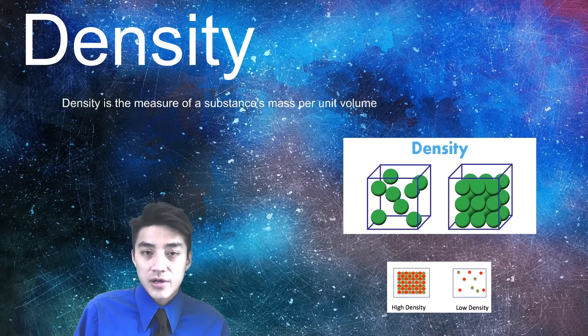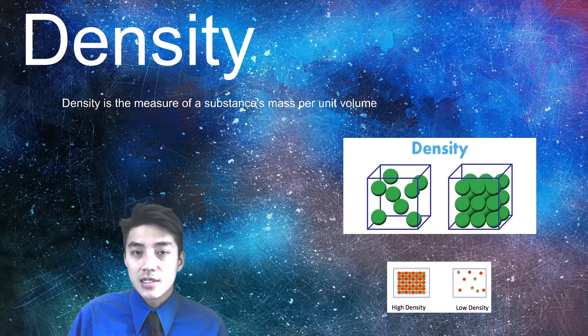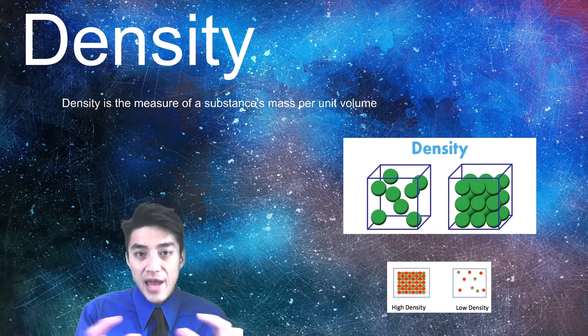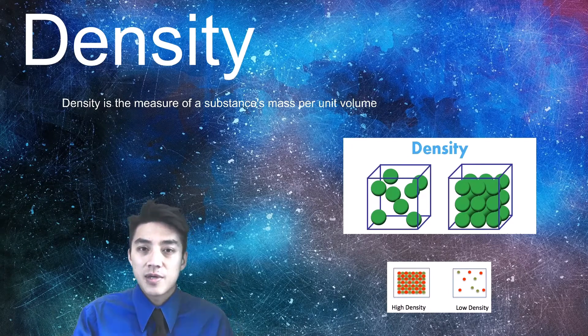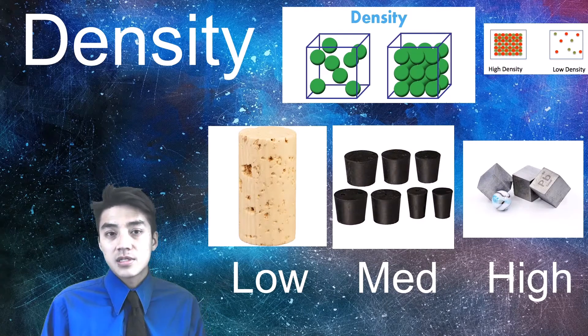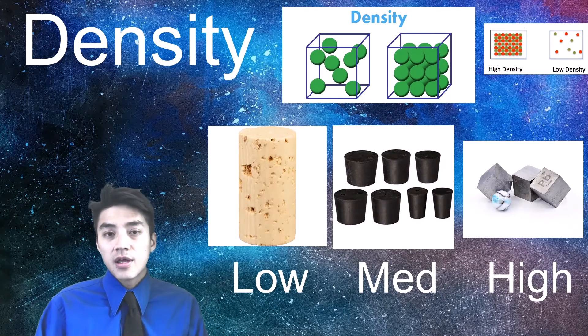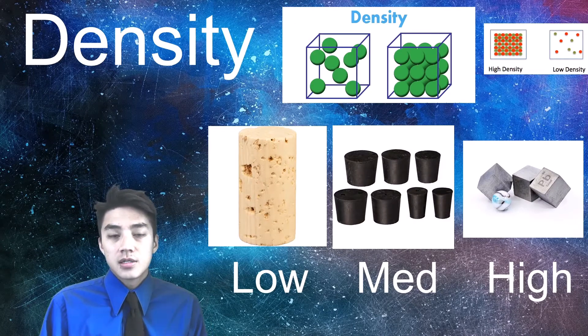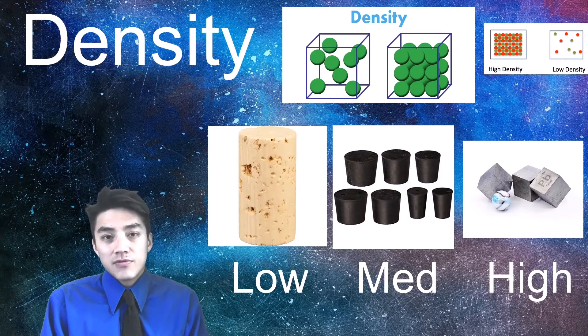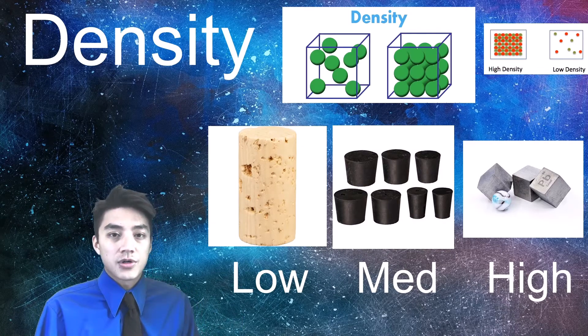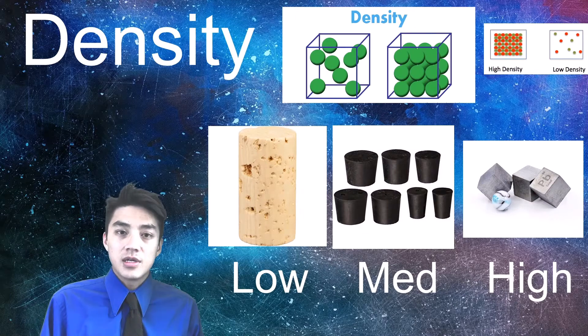Most people have a very intuitive sense of what density is. It's a substance's mass divided by its volume, so it's how much mass you have packed in a certain amount of space. Keep in mind it's not necessarily the thing that weighs the most that's the densest, but rather how much weight do you have packed in your volume. Everyone kind of understands cork is the least dense material, followed by rubber, and then the most dense would be lead.